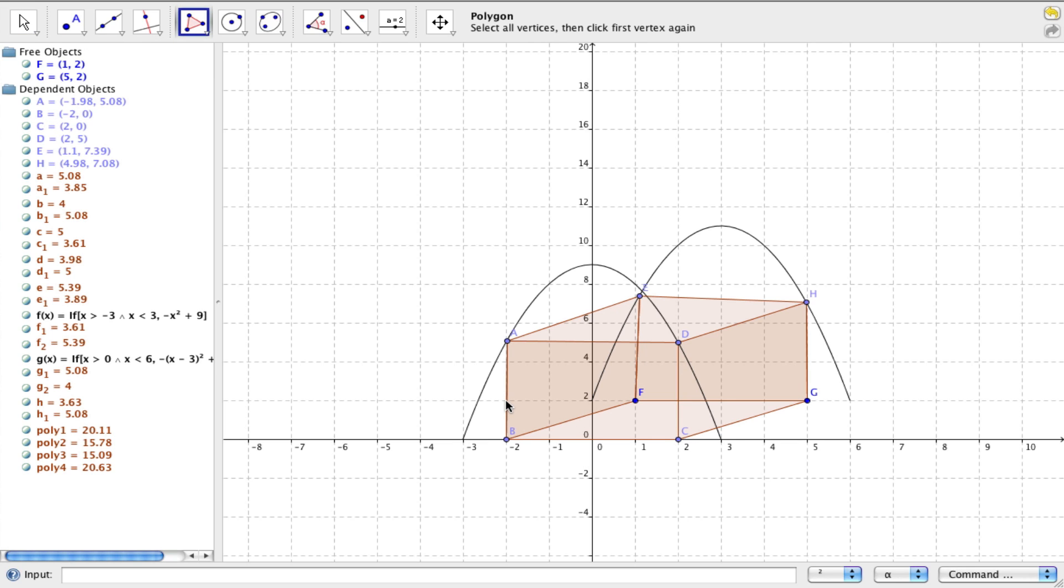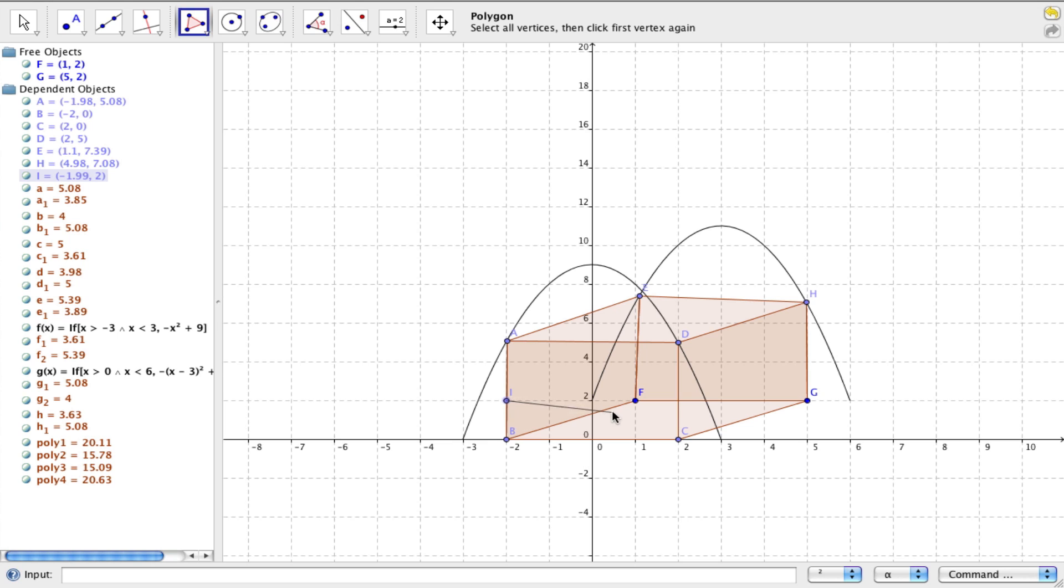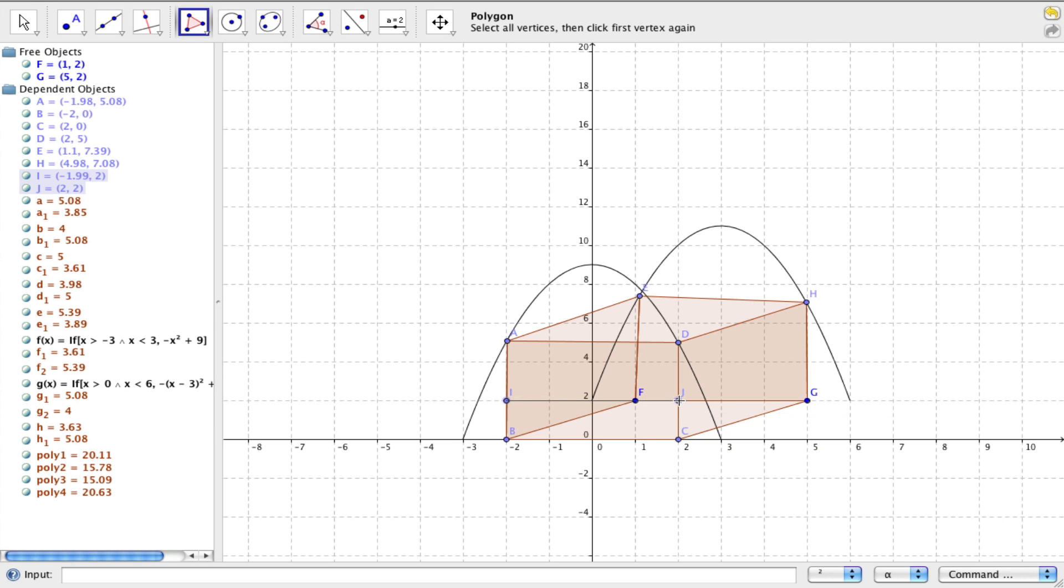and we'll click on the polygon again, and we'll make some floors. So let's just make some, we'll just make one floor. So we'll click here, go over to the side, C, D. We'll go back to G, H.